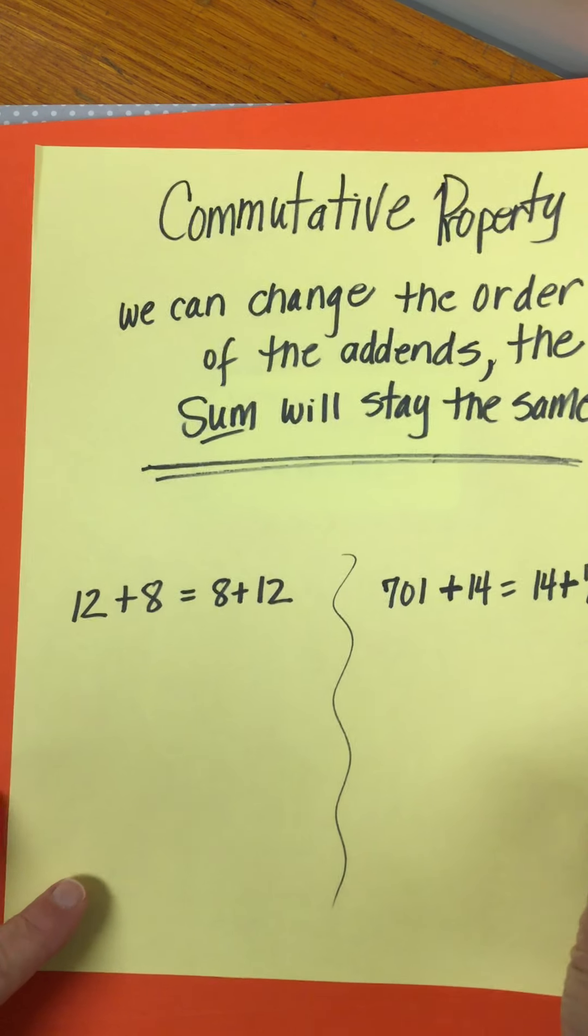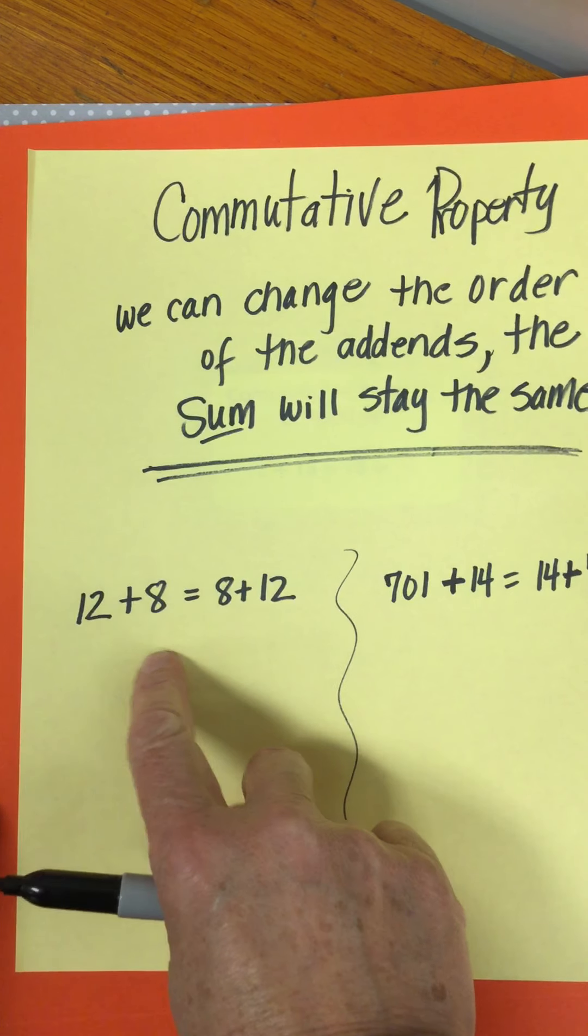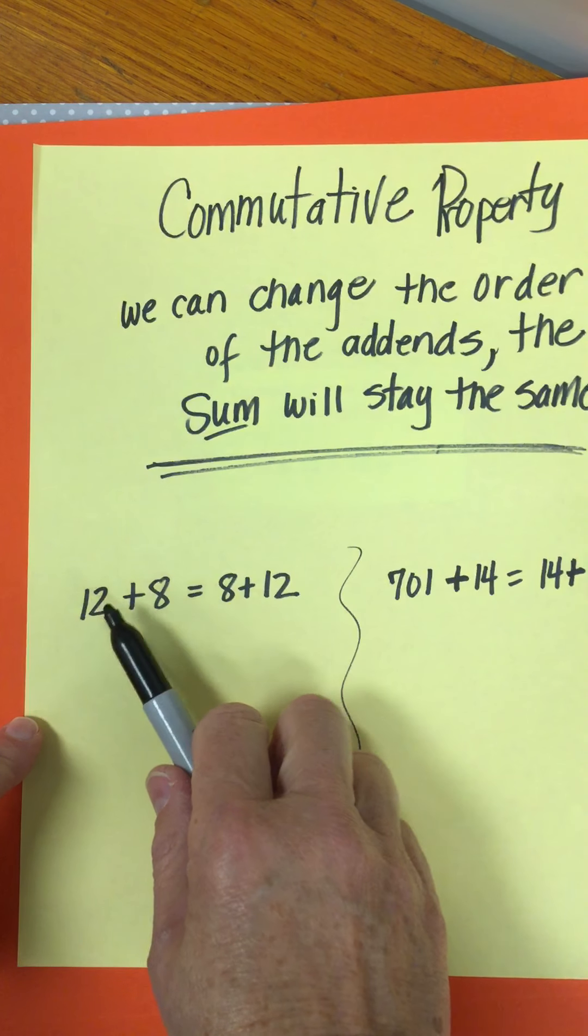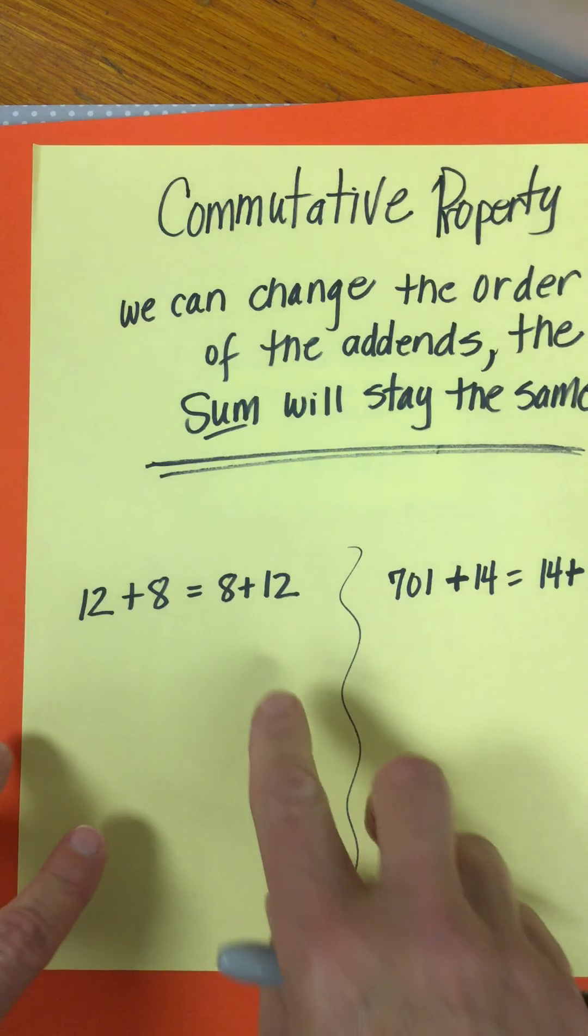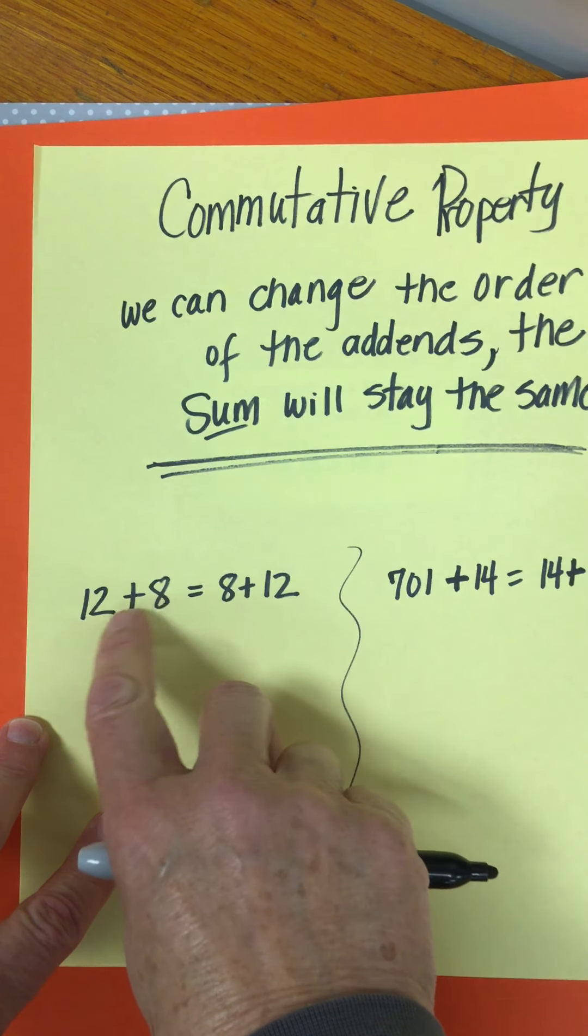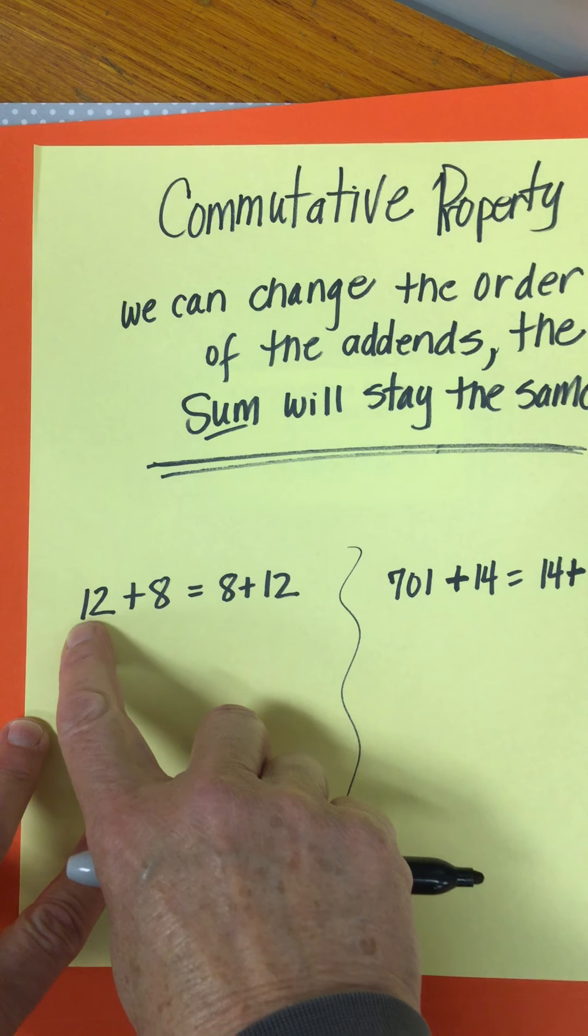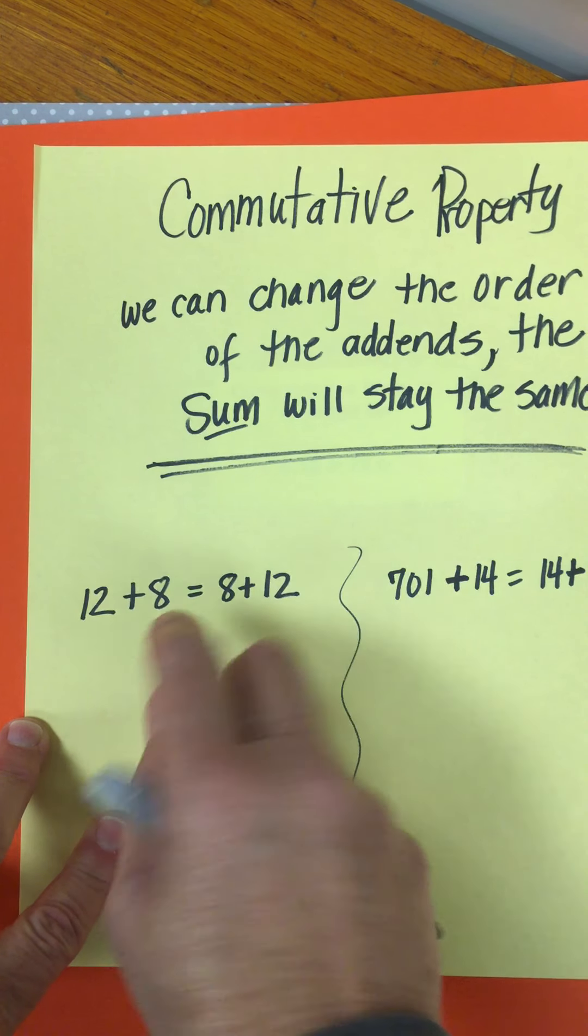So let's try to balance this. The equal sign says that they should balance. Let's see if they do. Well mental math, 12 plus 8. Well if you use that strategy of get to 10 as fast as I can, you know that 8 and 2 is 10 plus that 10 and once that would be 20.